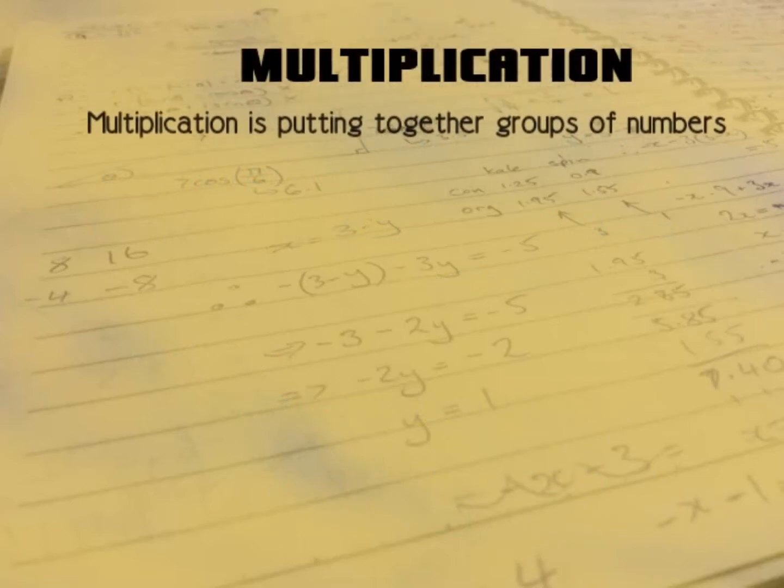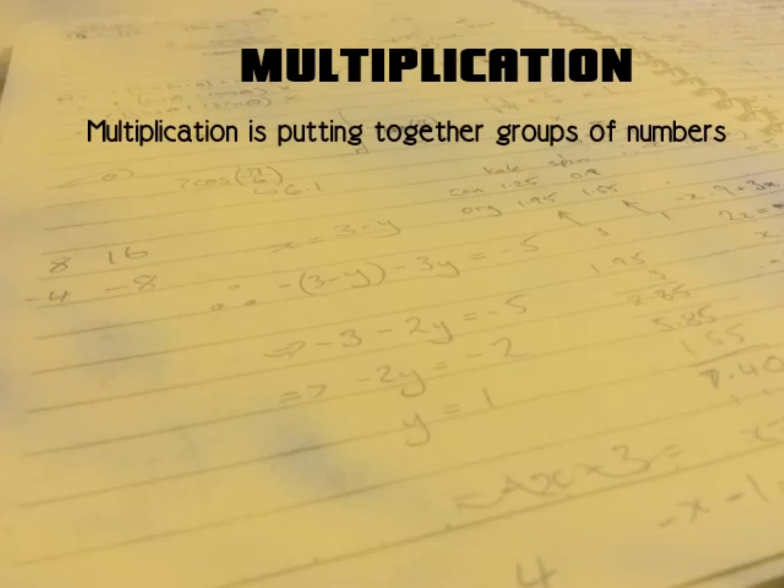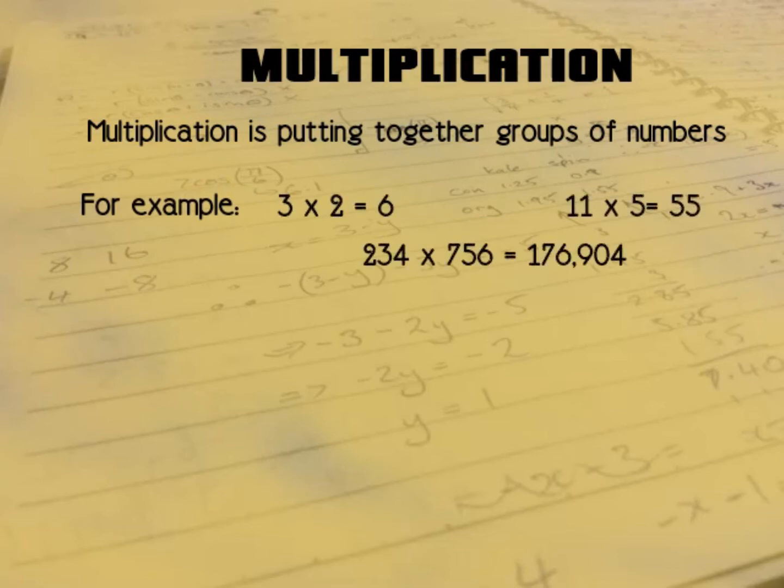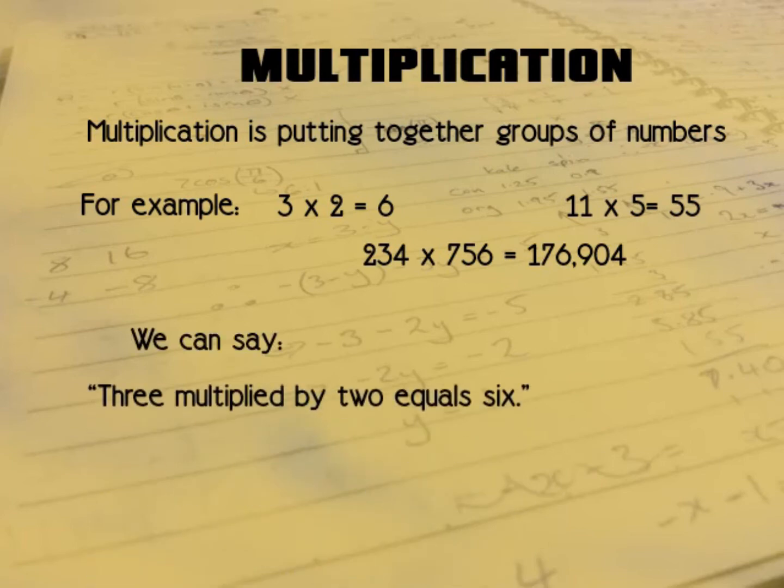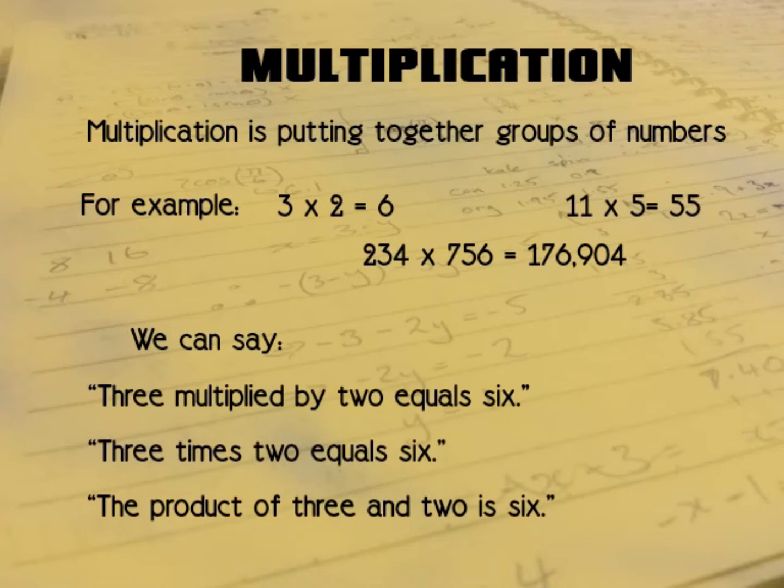Multiplication basically is putting together groups of numbers. For example we can say that 3 multiplied by 2 equals 6, 11 multiplied by 5 equals 55, or 234 multiplied by 756 equals 176,904. We can say this in different ways: 3 multiplied by 2 equals 6, 3 times 2 equals 6, or we sometimes say the product of 3 and 2 is 6.